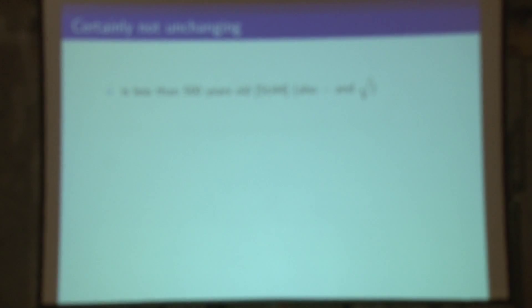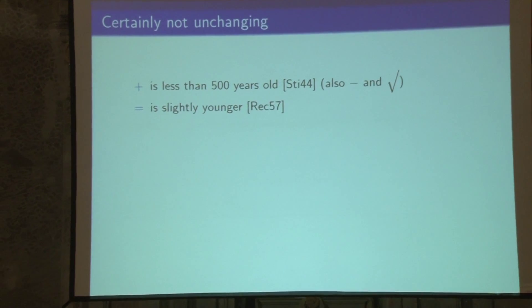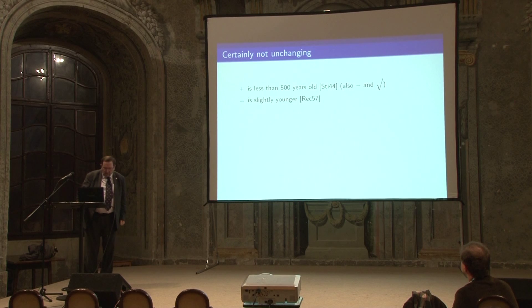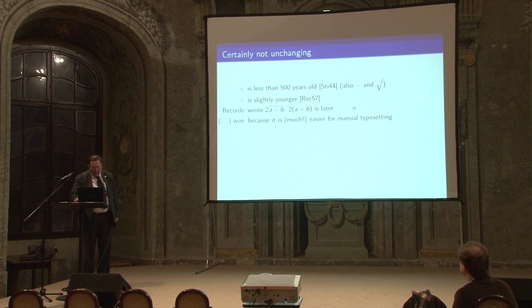It's certainly not unchanging. The plus sign is actually less than 500 years old — Stivalius introduced that in 1544, along with the minus sign and the square root sign. What's interesting is that the equal sign is somewhat younger, about 13 years younger, and Cambridge is working out how to celebrate its 500th birthday. Record, who wrote that, used a line over the A and the B as the first notation. Brackets came later — and brackets won. People no longer use that overline notation.